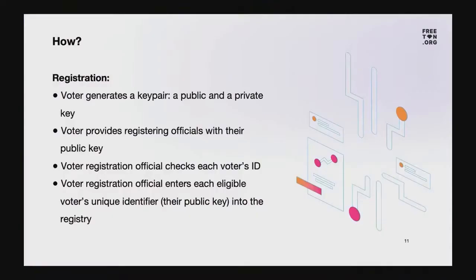How in particular will such a zero-knowledge protocol work? Let's iterate over all the protocol steps. First, registration. The voter has to generate their public identifier — this happens to be a key pair, a public and a private cryptography key. A private key should be kept private, and the public one can be shown to the world. Then, a voter needs to provide registering officials with their public key for the officials to put them into the eligible voter's registry — in case the voter is eligible, of course. Just check their ID and make sure the voter is eligible. The eligibility is supposed to be checked with ID validation. This has to be done by registering officials.